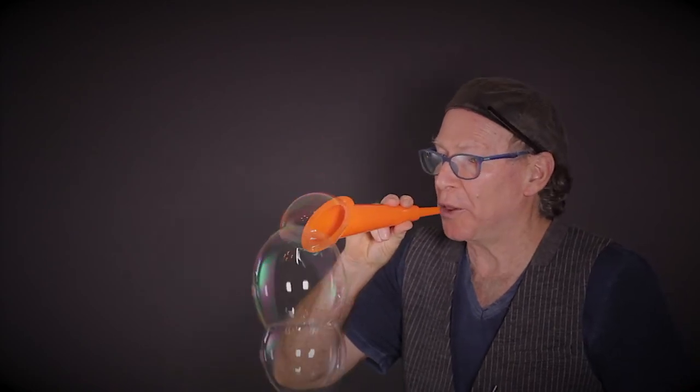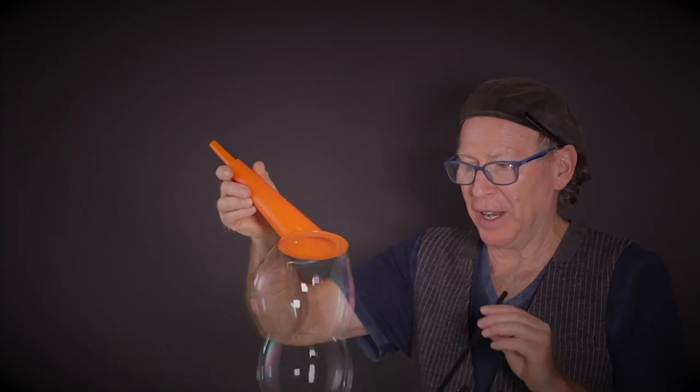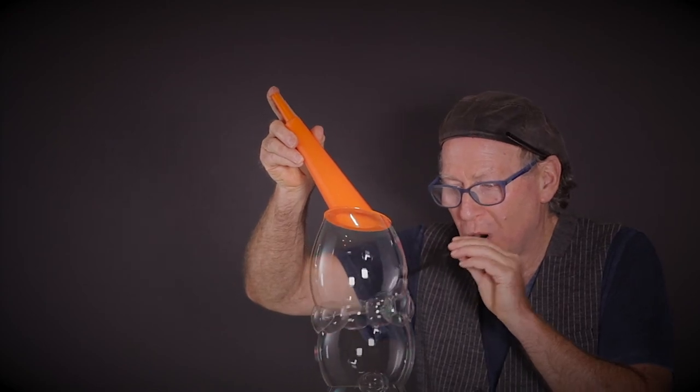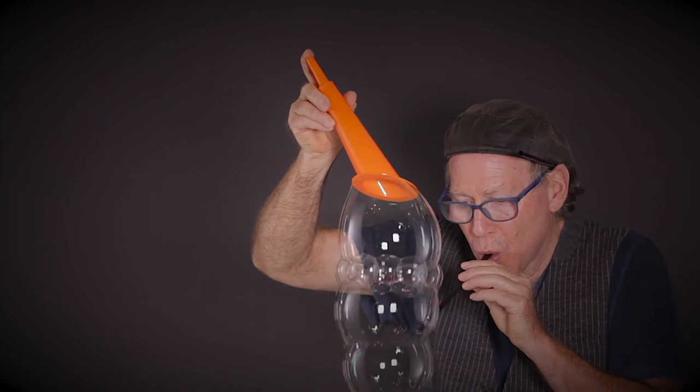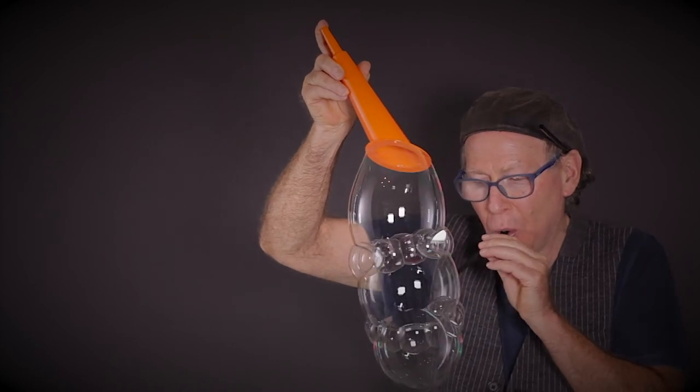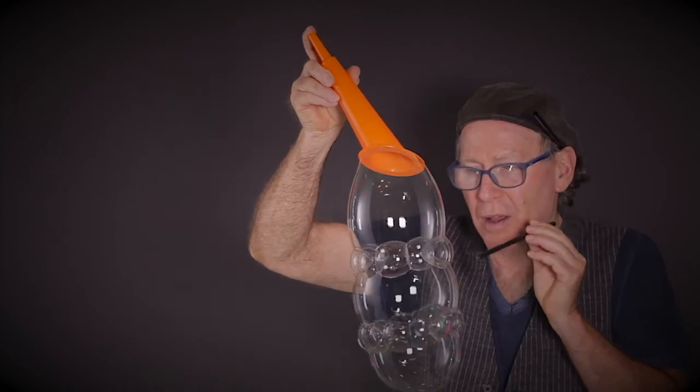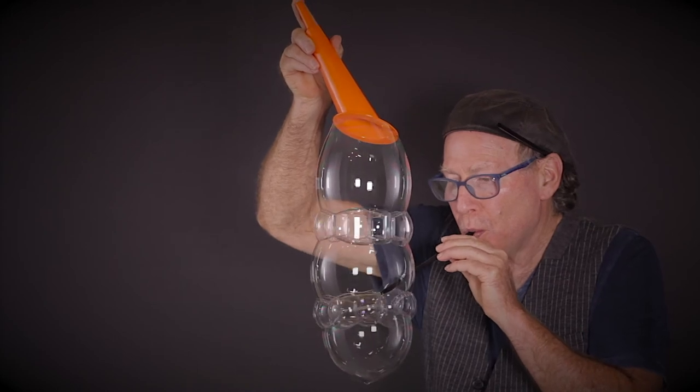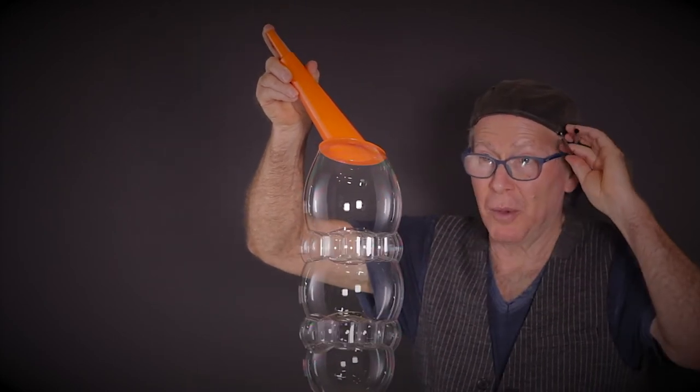Now we're going to do the double-decker carousel, another trick I first saw Tom Noddy do. So start with your single bubble, add a second, add a third, then you make two rows where these bubbles come together, put in your inner bubble. I keep a second straw behind my ear.